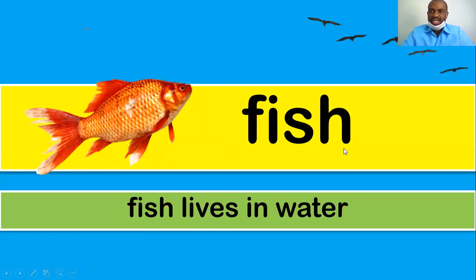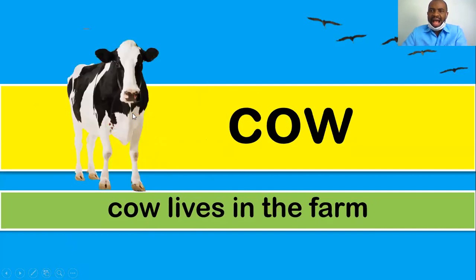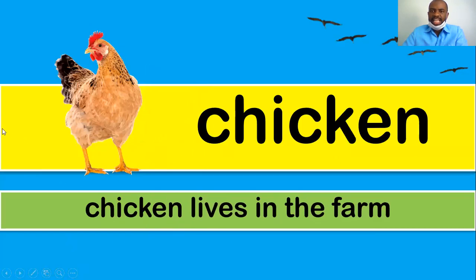Fish — fish lives in water. Cow — cow lives in the farm. Chicken — chicken lives in the farm. Some people have chicken for pets.